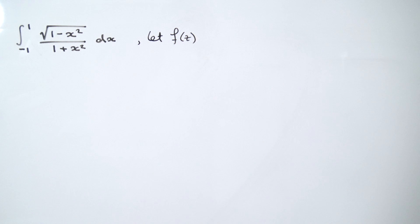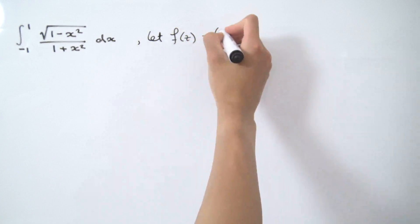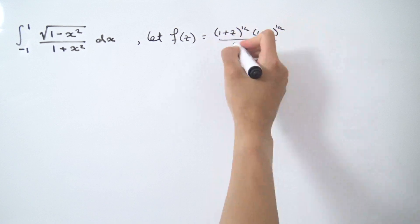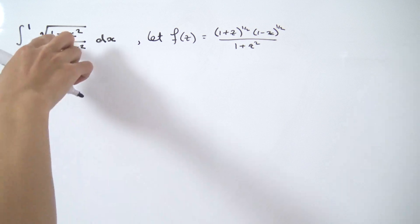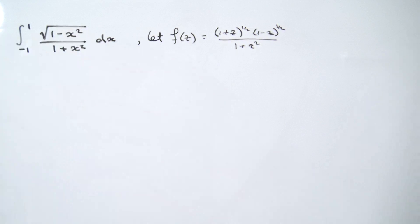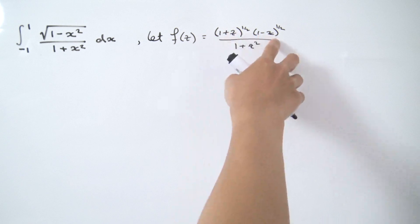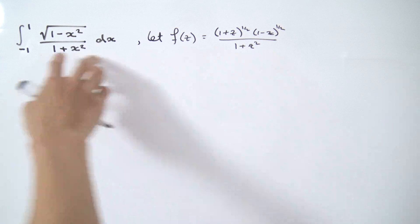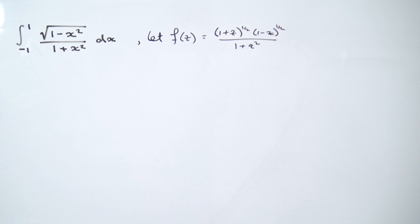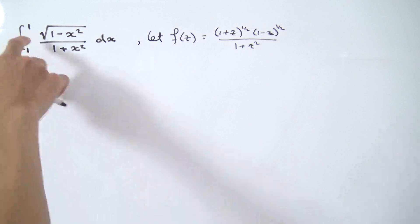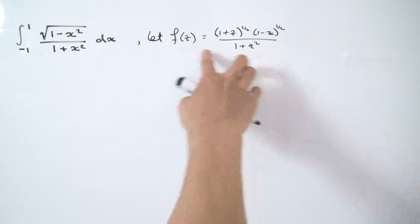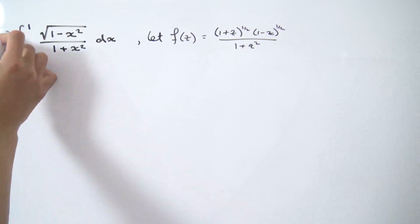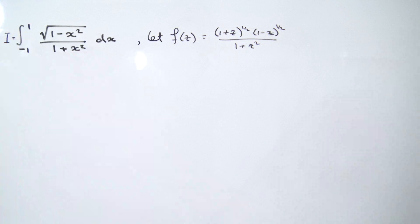Let's jump straight into the solution. We're going to let a complex function f of z equal (1 plus z)^(1/2) times (1 minus z)^(1/2) divided by (1 plus z) squared. You can see where this is coming from: 1 minus x squared factors via difference of squares into (1 plus z)(1 minus z), and of course we change x's to z's. On the interval minus one to one, these values coincide.